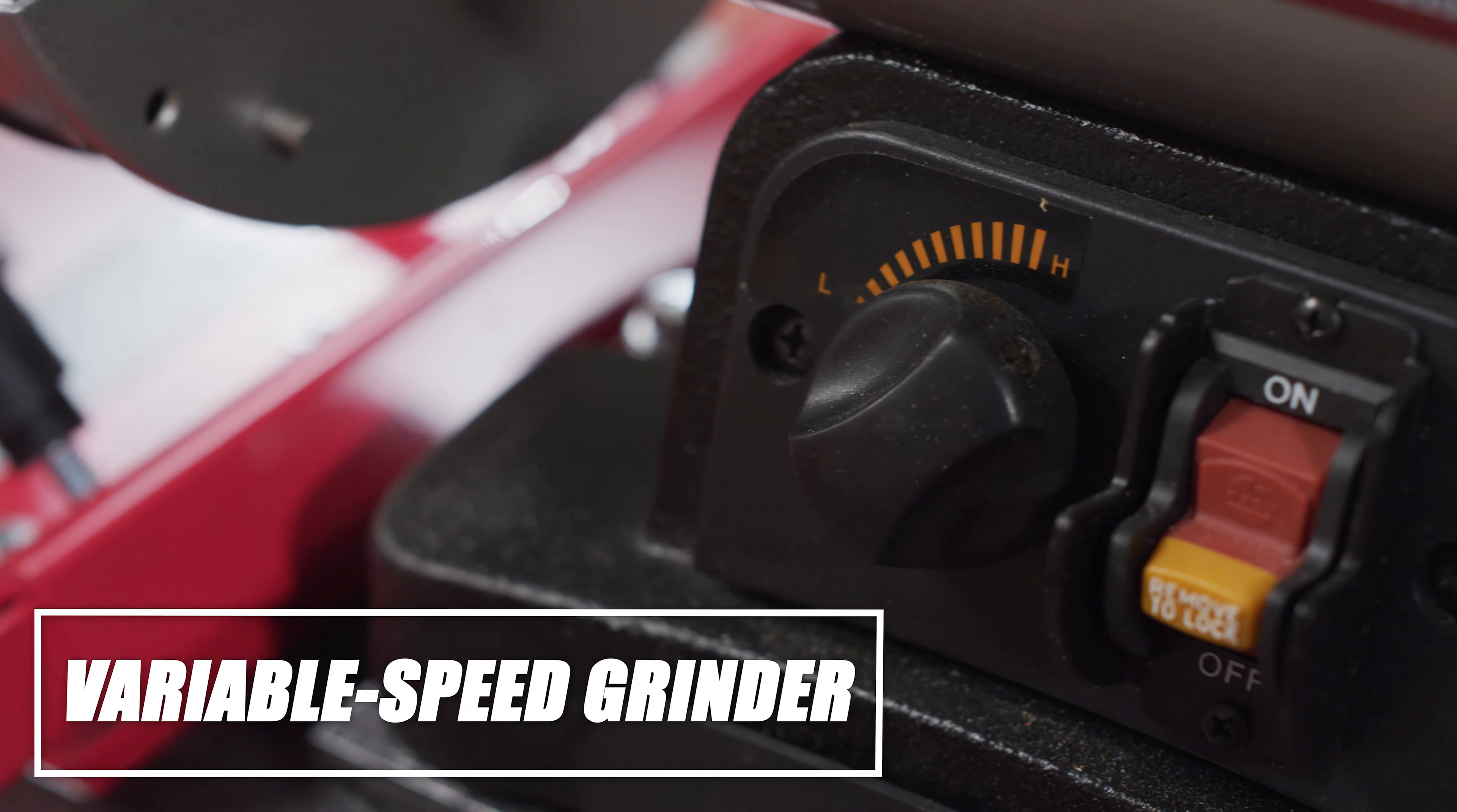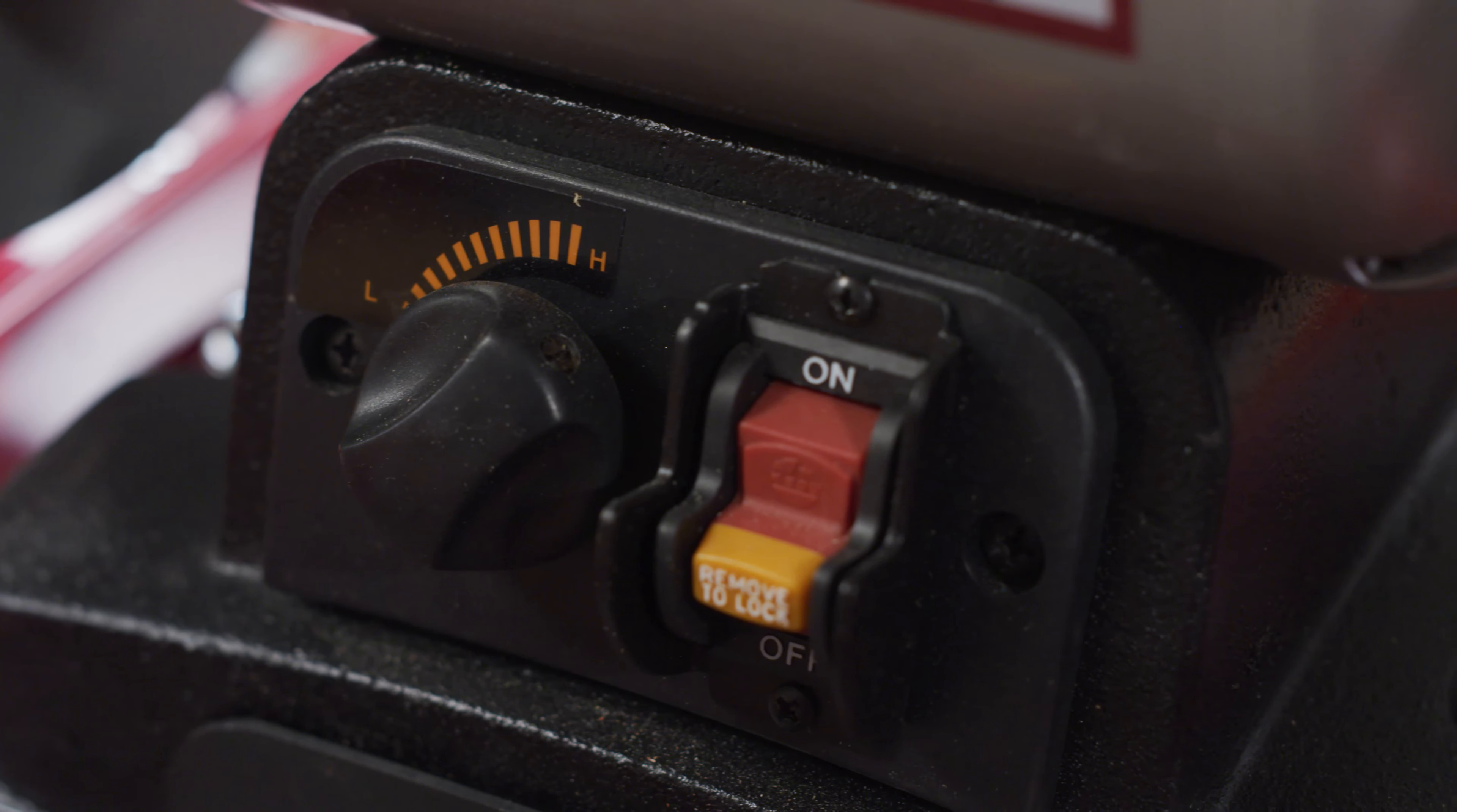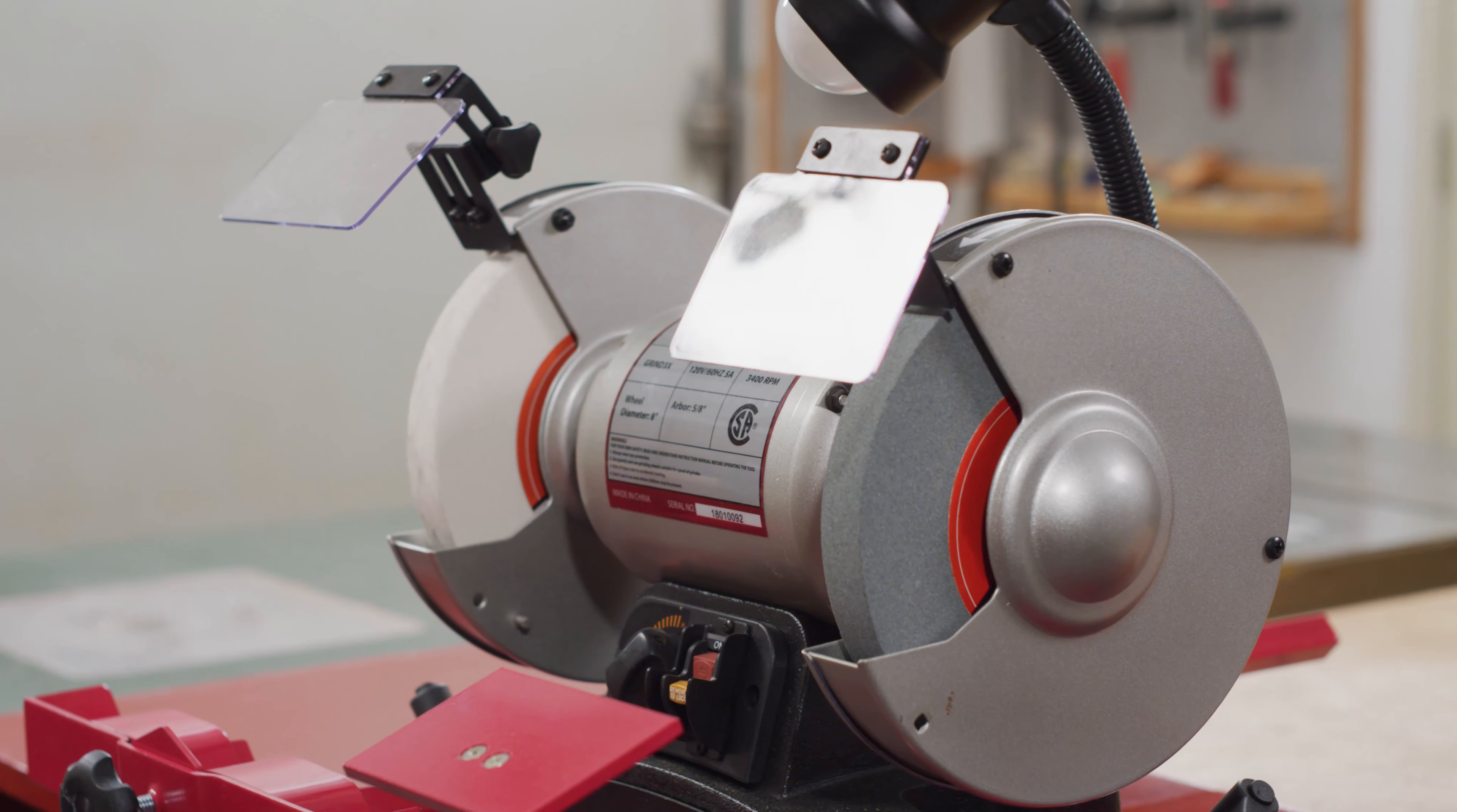In addition, a variable speed or low speed grinder allows you to sharpen tools at lower RPMs, preventing heat buildup that can ruin or temper the tool being sharpened.